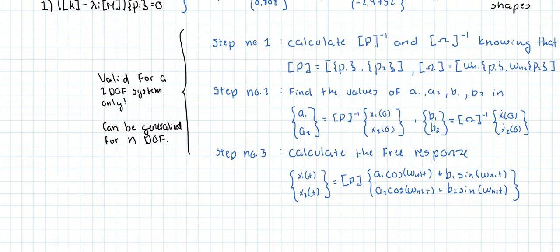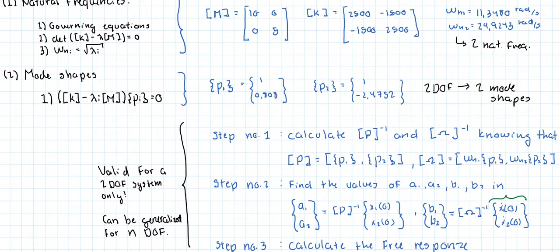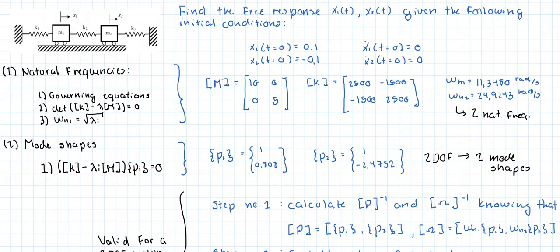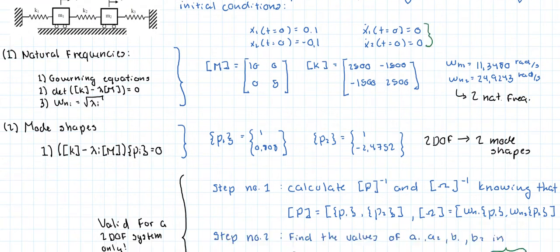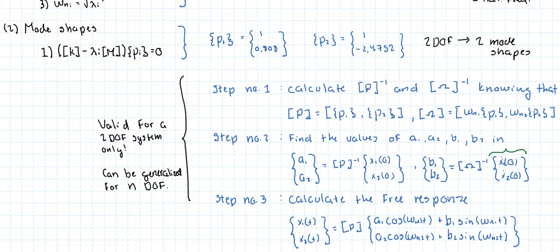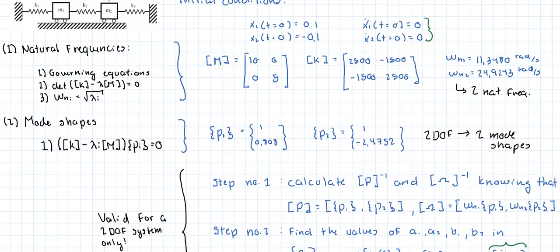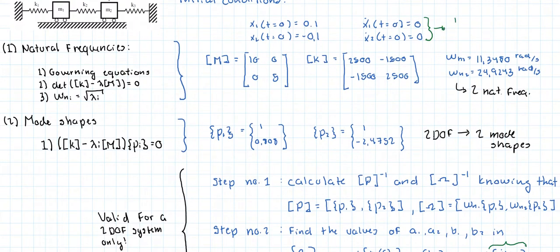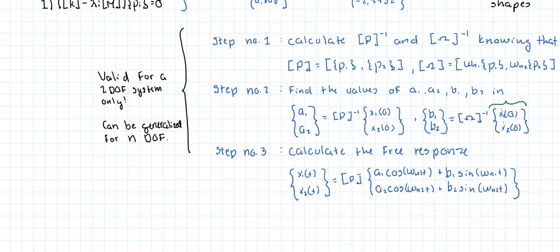If you take a look at this equation, if you have initial velocity conditions equal to zero — as is the case here — then the inverse of the Omega matrix multiplied by a zero vector leads to B values where b1 equals zero and b2 equals zero. So when we get to the third step where we calculate the free response, that term will simply disappear because the B values are equal to zero. So let's get going.